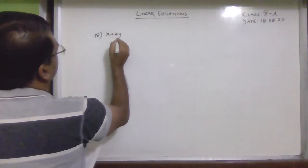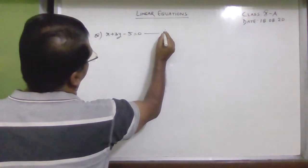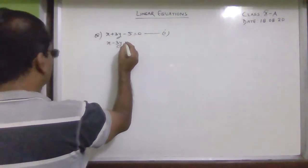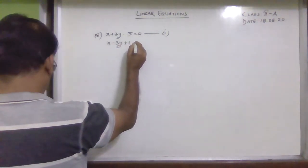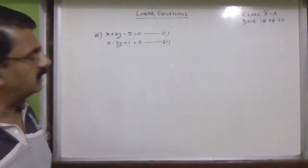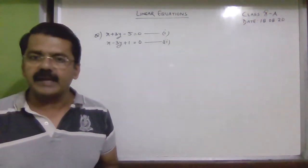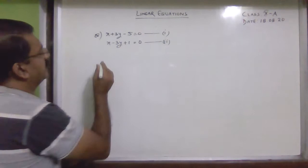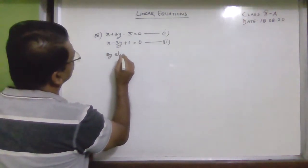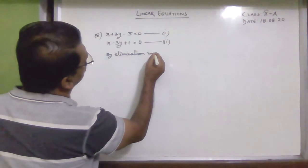The first question is: x + 3y − 5 = 0 (equation 1) and x − 3y + 1 = 0 (equation 2). First of all, I am going to solve these two equations by algebraic method, applying the elimination method.